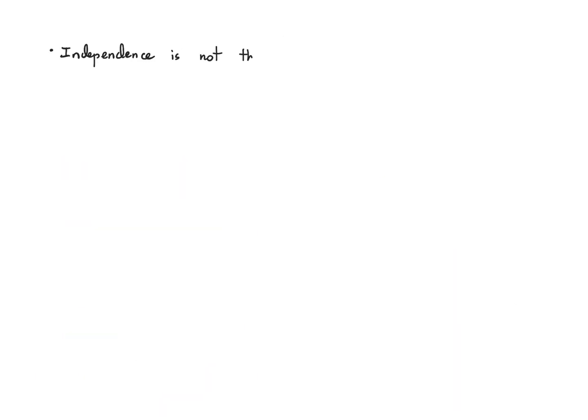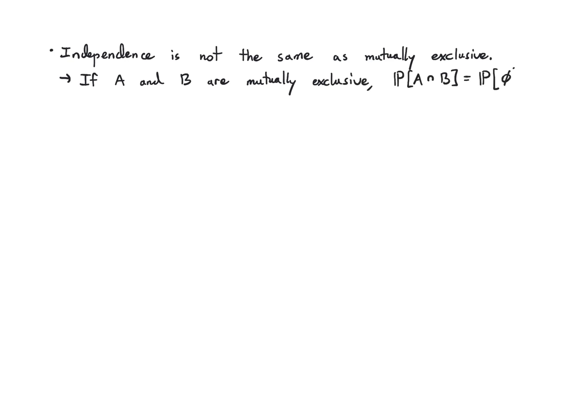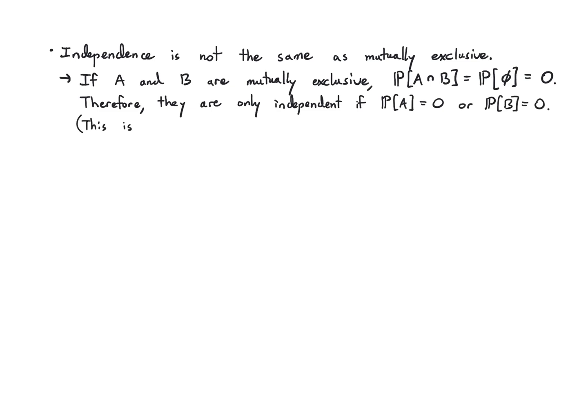Independence is not the same concept as mutually exclusive. Specifically, if A and B are mutually exclusive, the probability of their intersection is 0. So they are only independent if either A or B has probability 0, which is not a very interesting scenario. Mutual exclusivity can be visualized easily in terms of overlap. Independence is harder to visualize because events that end up being independent tend to overlap — it's really a question of how their probabilities factor.